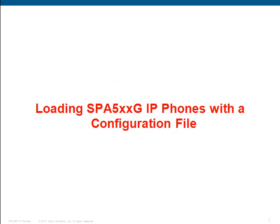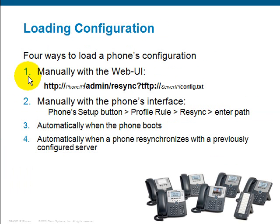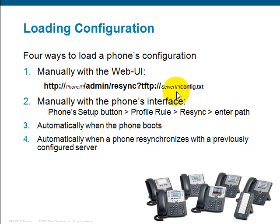Now that you've got the configuration file, you'd want to load it into the phone. There are several ways you can do this. First, manually with the web user interface: http://[phone IP address]/admin/resync?tftp://[TFTP server IP address]/[path to config file]. In this case I've called it config.txt, but you can call it anything you like. You don't have to use TFTP — you can use any other protocol of choice, provided you've got a server serving it up.